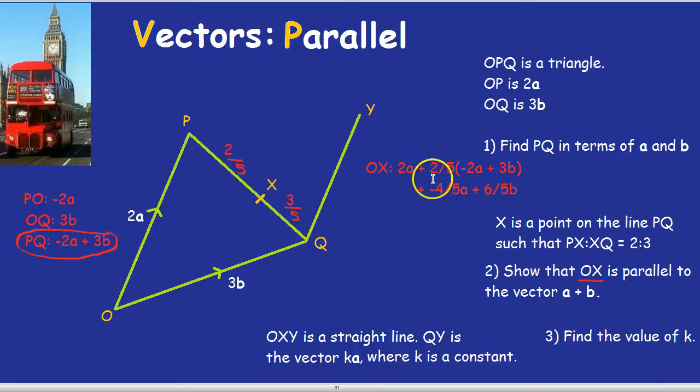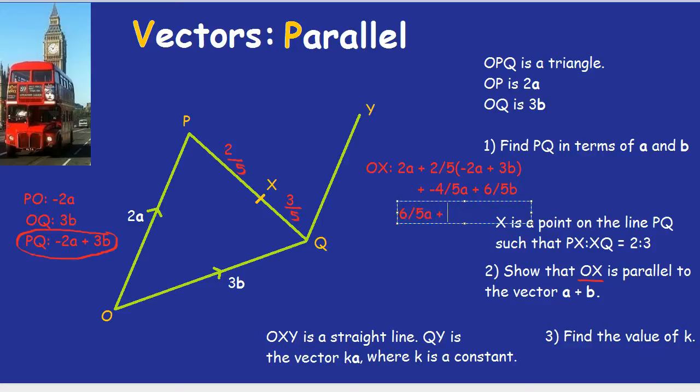Now 2 fifths times 3 is 6 fifths. But fraction knowledge is going to come in handy now because now we need to add 2a and minus 4 fifths. To do that, what I would do is convert the 2a into something fifths. In this case, it would be 10 fifths. If you think about it, 10 fifths is 10 divided by 5, which is 2. So we have 10 fifths of a minus 4 fifths of a. The plus and the minus just become a minus. 10 take away 4 is 6. So we have 6 fifths of a. And we also still have 6 fifths of b.